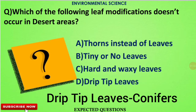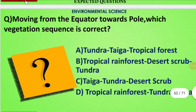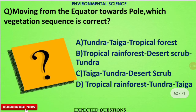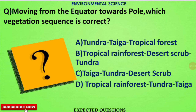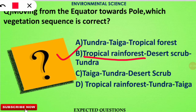The next question is: moving from the equator towards the pole, which vegetation sequence is correct? The correct option is B. Near the equatorial region, from the Tropic of Cancer to the Tropic of Capricorn, we find tropical rainforest. As we move towards the pole, we find desert or scrub forest, and nearest the pole is tundra vegetation, which is tree-less.